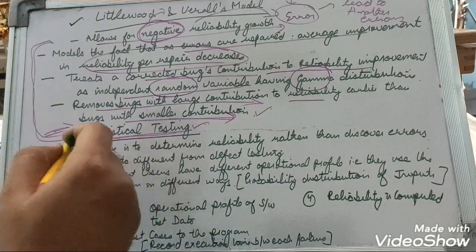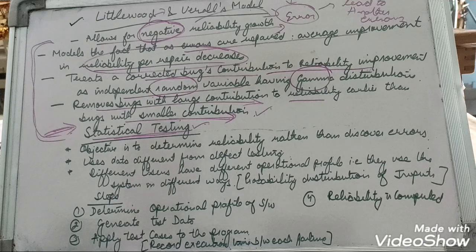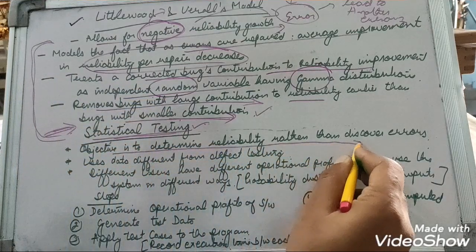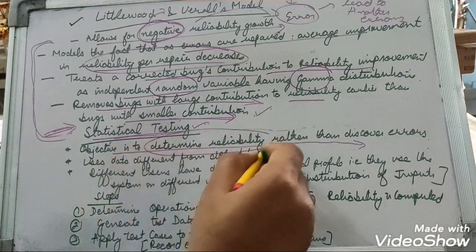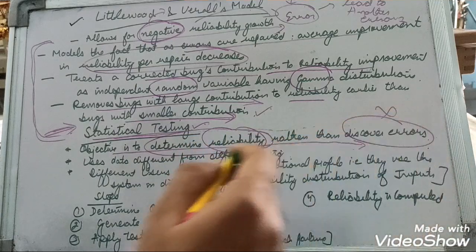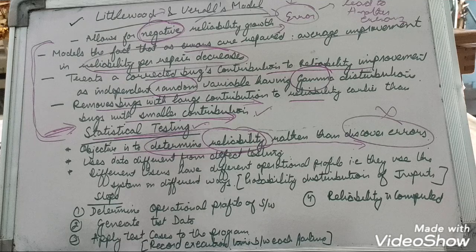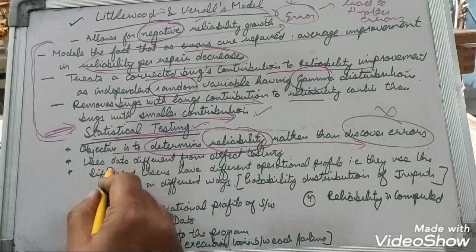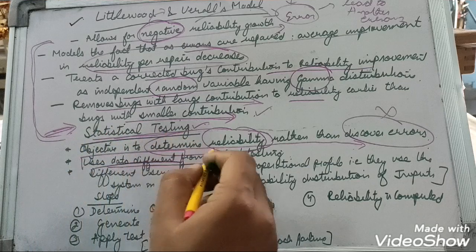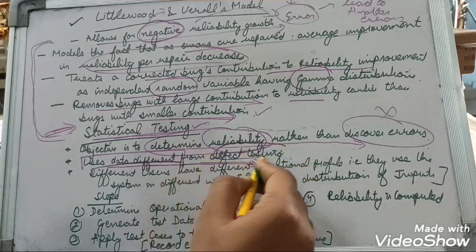Another very important topic in reliability modeling is statistical testing. Unlike previous testing strategies which were carried out to remove errors, the objective of statistical testing is somewhat different — it is to determine the reliability of the software rather than to discover errors.